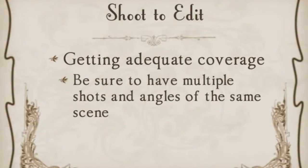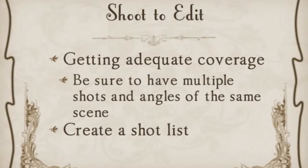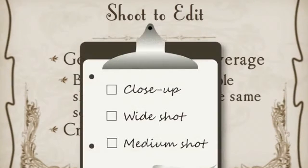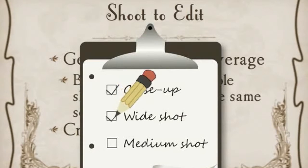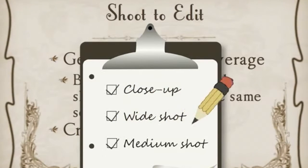The other thing is, with our storyboard, we are going to build a shot list. Once you know the angles that you kind of see in your mind, you're going to develop a shot list. How is this going to help you? As you shoot, you're going to go through and check mark: I got my close-up, I got my wide shot, I got my medium shot. And you know when you sit down to edit that you have everything covered. That is what shooting to edit is.